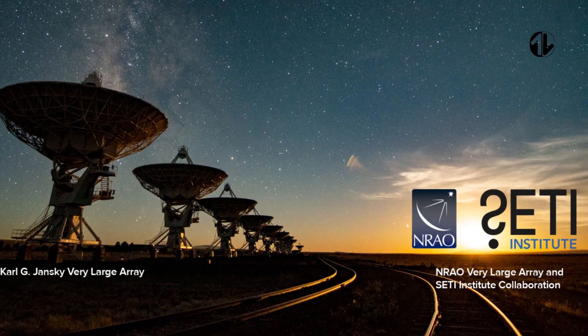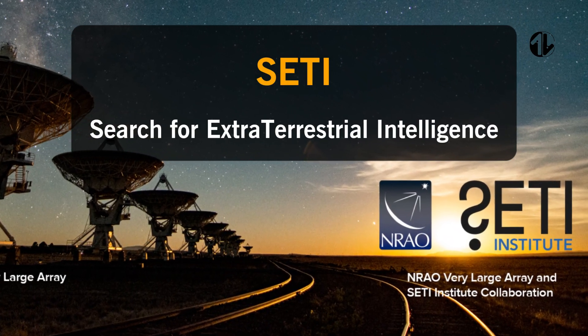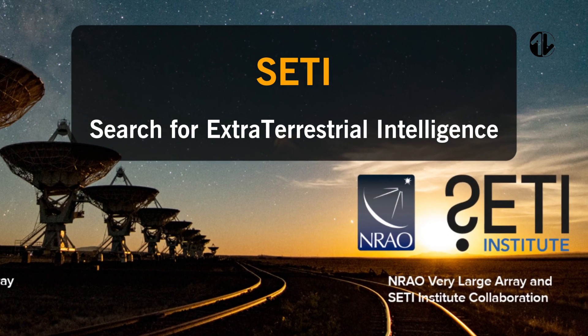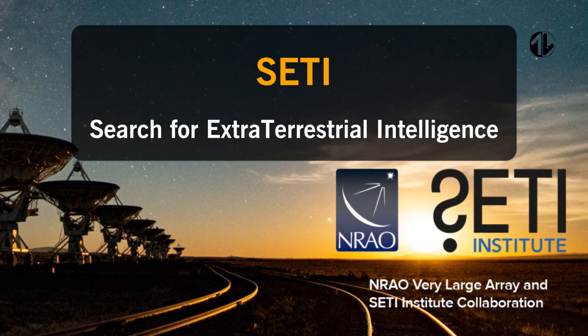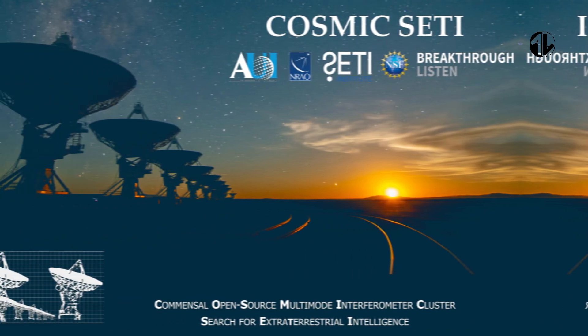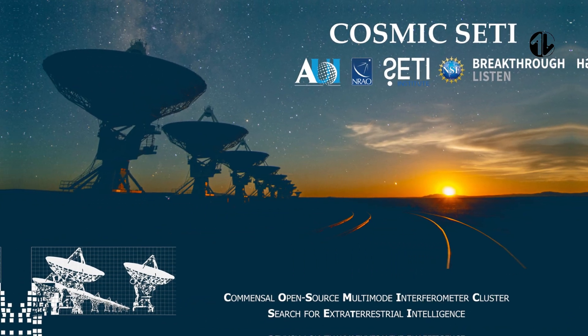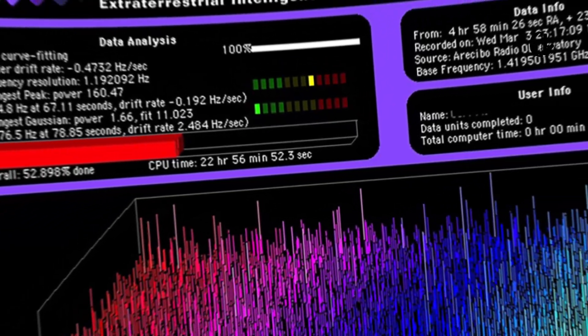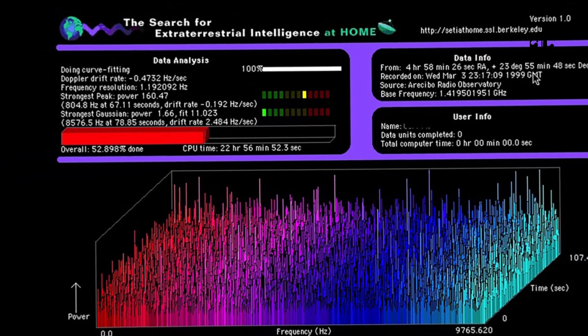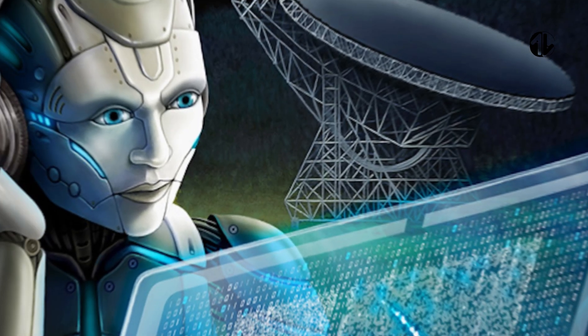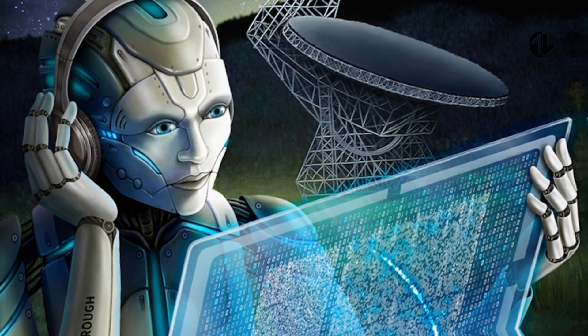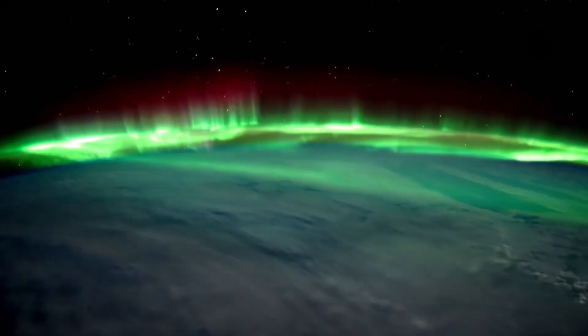SETI, an abbreviation for Search for Extraterrestrial Intelligence, began to gain serious scientific attention in the 1960s. This project aims to use advanced space observation instruments to search for radio signals originating from planets outside our solar system. The primary goal of SETI is not only to find extraterrestrial beings, but also to gain a better understanding of the universe around us.